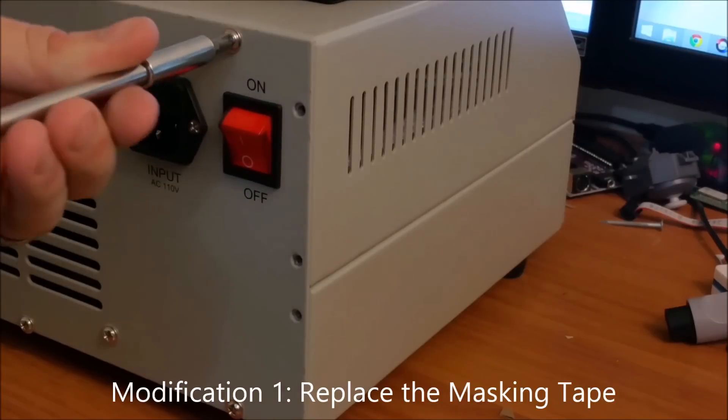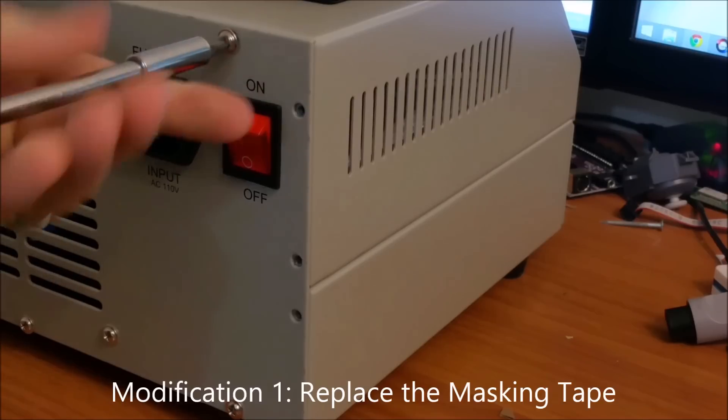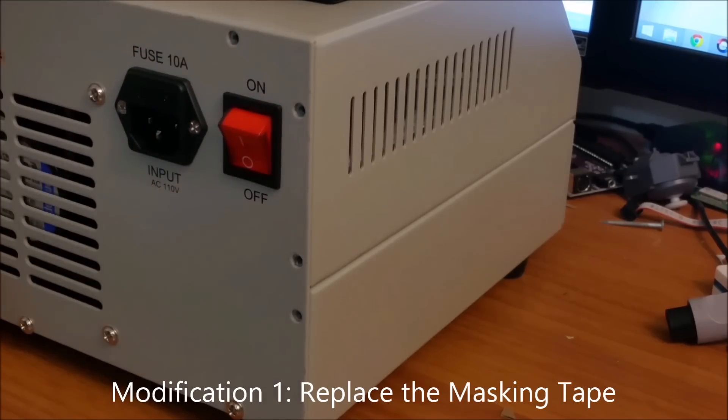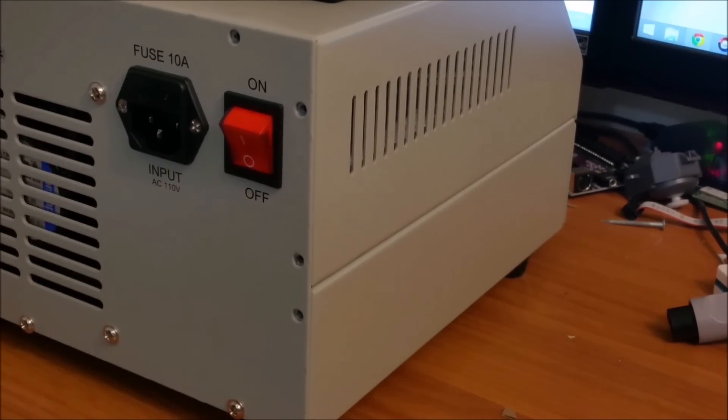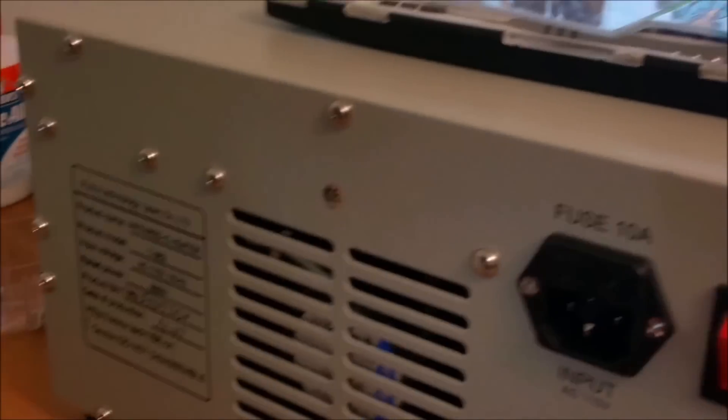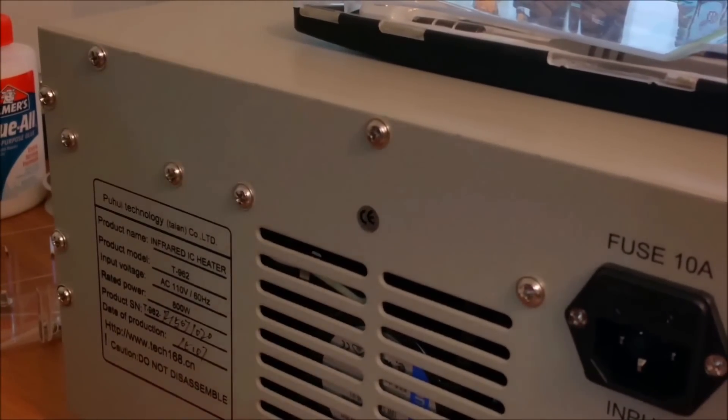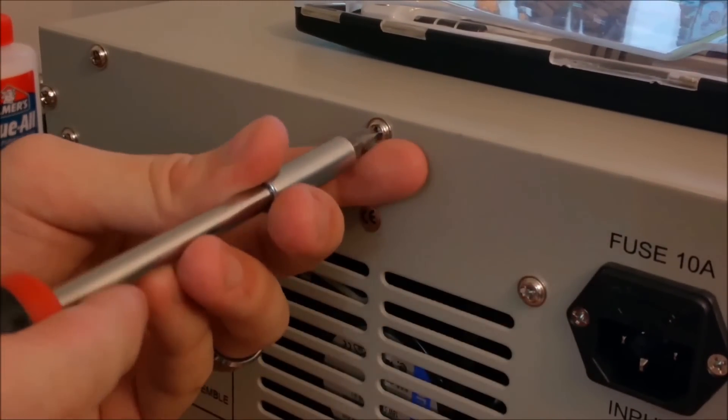The first modification we'll do is replacing the masking tape with Kapton tape. This is the one that I said you pretty much should do whether you want to or not. Inside the oven, masking tape is used in multiple sections. There have been many reports of people saying that this masking tape will burn up during oven use and it creates a really nasty smell.